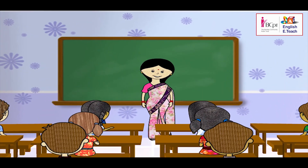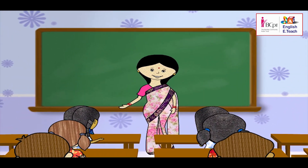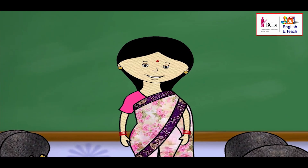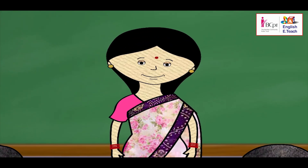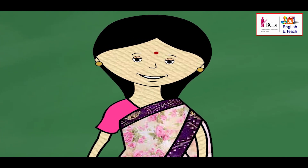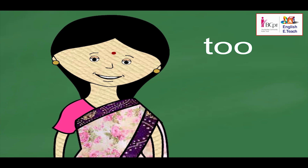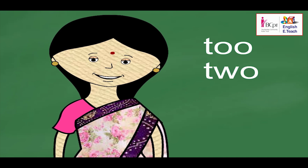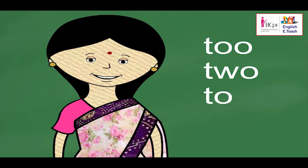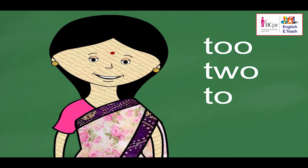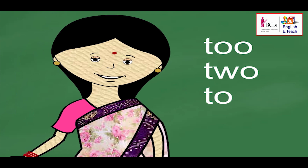Children, Ahmed talked about three words that sound the same but are spelt differently and have different meanings. They are TO, TWO, and TOO. Let's play a game to understand this better.